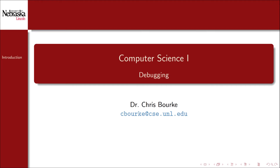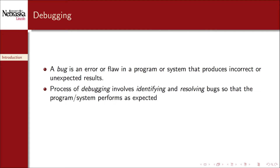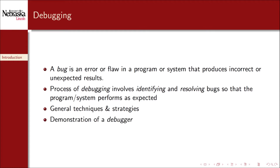Welcome back to this Computer Science 1 video series. In this short module we'll cover debugging and debugging techniques. A bug is an error or flaw in a program or computer system that produces incorrect or unexpected results. The process of debugging involves identifying and resolving bugs so that the program or system works as intended. In this first part we'll cover general techniques and strategies for debugging, then we'll demonstrate the use of a debugger tool on a buggy program.